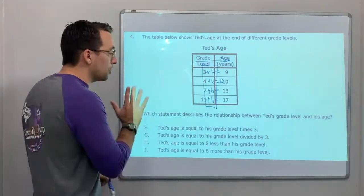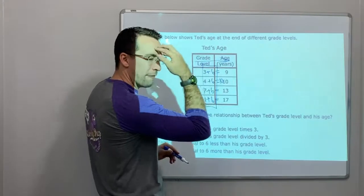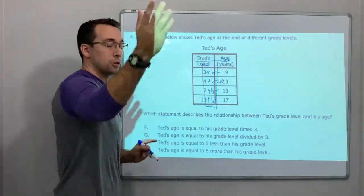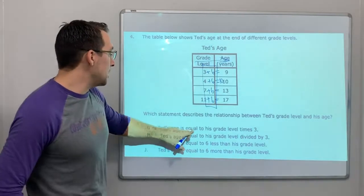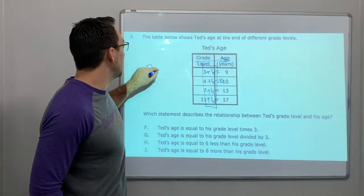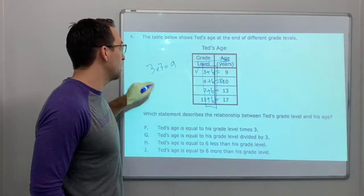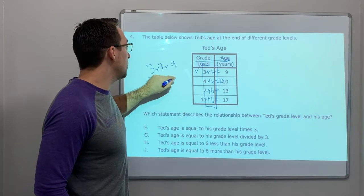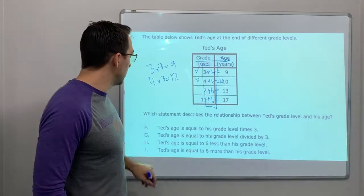Now look, I haven't even read the answers yet. I just looked at the numbers and I found the pattern by myself. So now I'm going to go to the answers. Ted's age is equal to his grade level times 3. No, 3 times 3 equals 9, that works for this grade. 4 times 3 equals 12. So that one's wrong, right? So F is wrong.